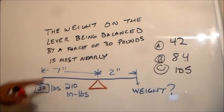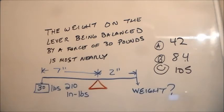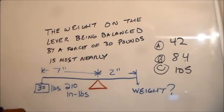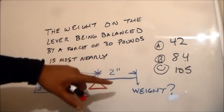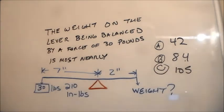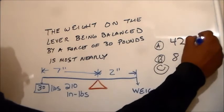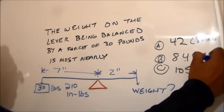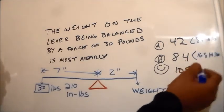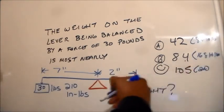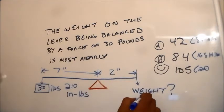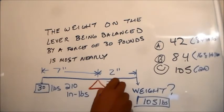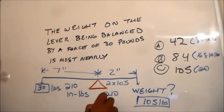Because we have 210 inch-pounds, we have to have the same number of inch-pounds on this side. So we have to look at what number could be multiplied by two to give us 210 inch-pounds. A and B goes right out the window. Because A is only going to give us 84 inch-pounds. This is going to give us 168 inch-pounds. So 105 gives us 210. 2 times 105 is 210. So if this weight is 105 pounds.